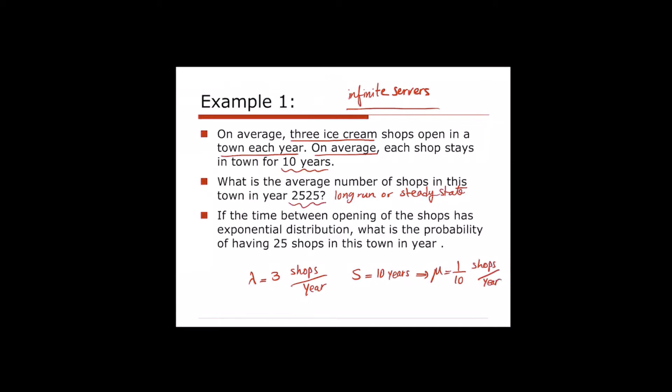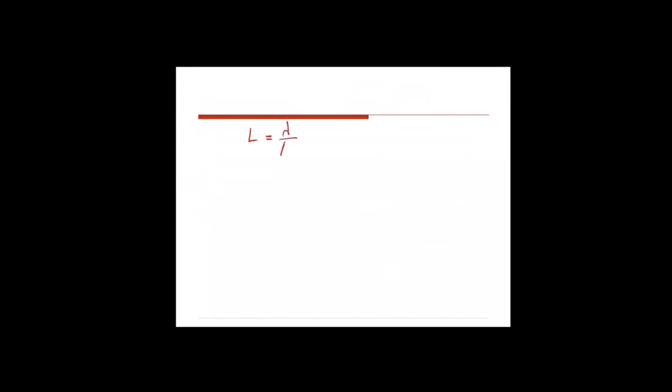The first question asks for the average number of shops in this town in the long run. That is L = λ/μ. With lambda = 3 and μ = 1/10, we get L = 3 ÷ (1/10) = 30 shops working in this town in any given year.